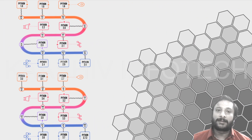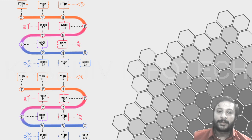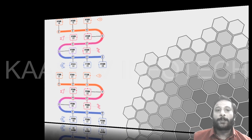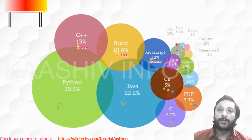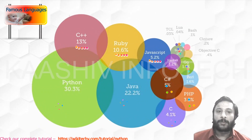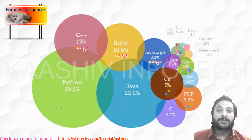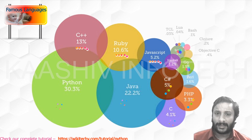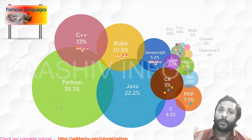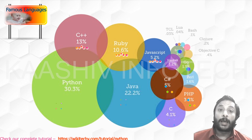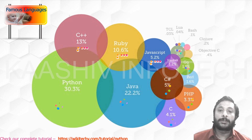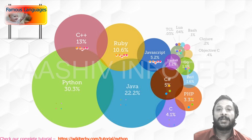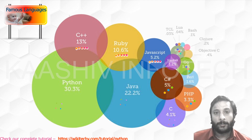Looking at the history, from the initial 1.0 version of Python up to versions 3.7 and 3.8, there are several versions of Python. According to the statistics report from 2019-2020, compared to any other language, Python is dominating the industry.